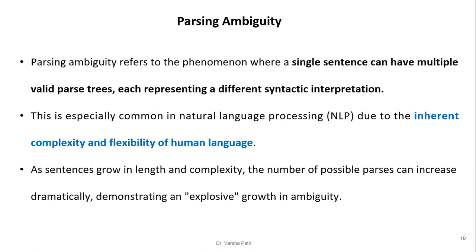Parsing ambiguity refers to the phenomenon where a single sentence can have multiple valid parse trees. This is possible even with a well-designed parser, because when rules are unambiguous the parse tree for a sentence is unique — but when grammar is ambiguous, multiple meanings can arise for a particular sentence, each representing a different syntactic interpretation. This is especially common in NLP due to the inherent complexity and flexibility of human language, and as sentences grow in length the number of possible parses can increase dramatically.